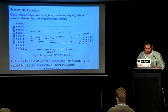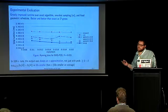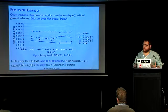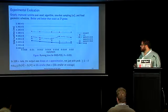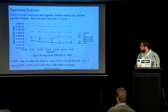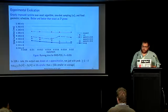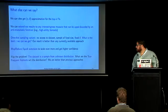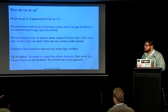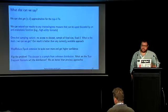We actually always obtain an epsilon approximation — that is, the approximation properties are always satisfied, not just with probability 1 minus delta. This is because we compute a bound to the Rademacher averages, not the exact Rademacher averages. Because of this, our estimation of the frequency is actually much better than just epsilon, giving a very close approximation of the collection of frequent itemsets. We can extend this to the top-K frequent itemsets and to any interesting measures that can be upper bounded by an anti-monotonic function, including high utility itemsets.